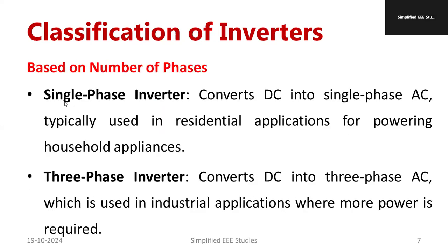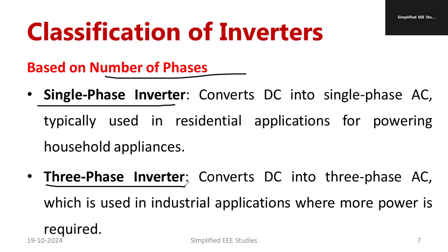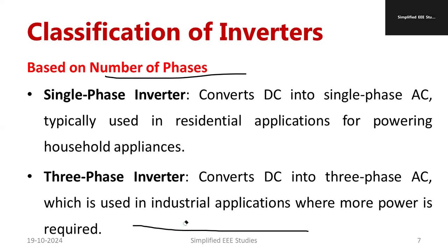According to the number of phases, we have single-phase inverter and three-phase inverter, depending on the supply. Normally we use single-phase inverters in household applications. For industrial loads requiring three-phase supply, we use a three-phase inverter. That is the major difference between single-phase and three-phase inverters.